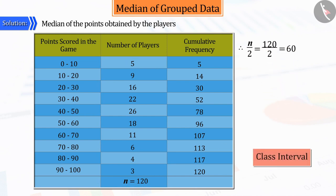So, here, looking at the value of the median n over 2, i.e., 60, can you tell it is greater than or closest to the cumulative frequency of which class interval?